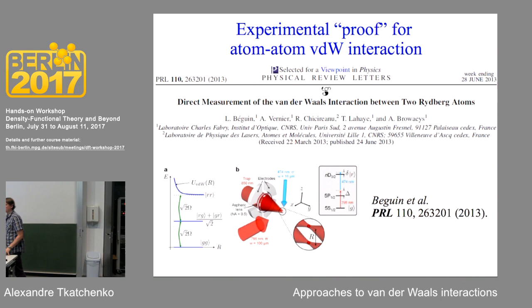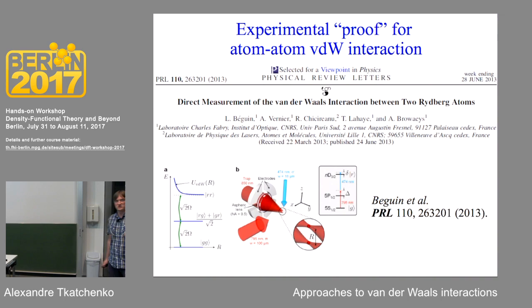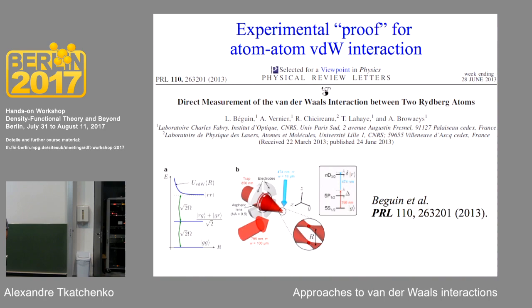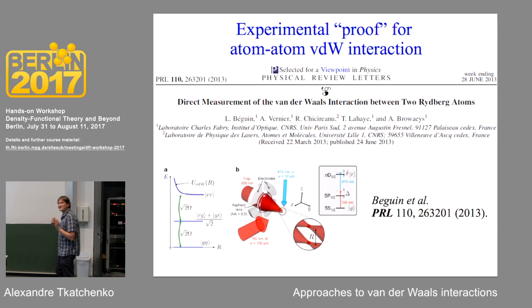The textbook picture of van der Waals interactions can actually be proven experimentally. Before 2013 we didn't have experimental proof that van der Waals interactions exist between two atoms. Measuring them between two ground-state atoms is hard because the interaction is extremely small — two argon atoms separated by 10 Å interact at about 0.01 meV. However, for a Rydberg excited atom, the polarizability scales as n to the 7th power where n is the principal quantum number, and the C6 coefficient scales as n to the 11th.